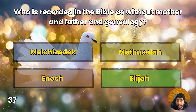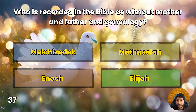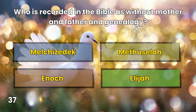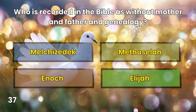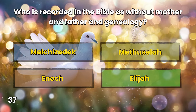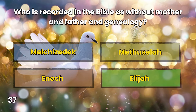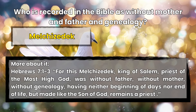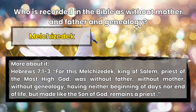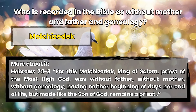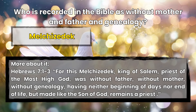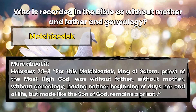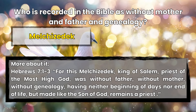Question 37: Who is recorded in the Bible as without mother and father and genealogy? Melchizedek, Methuselah, Enoch, or Elijah? Melchizedek. Hebrews 7:1-3 — For this Melchizedek, king of Salem, priest of the Most High God, was without father, without mother, without genealogy, having neither beginning of days nor end of life, but made like the Son of God, remains a priest.